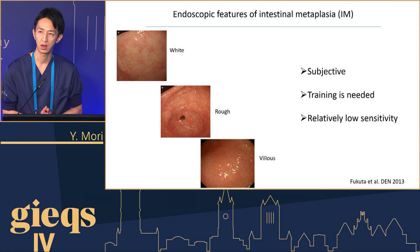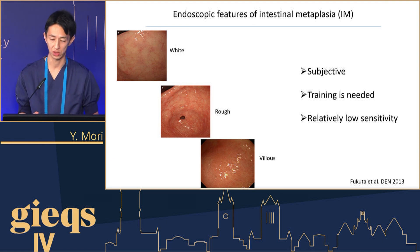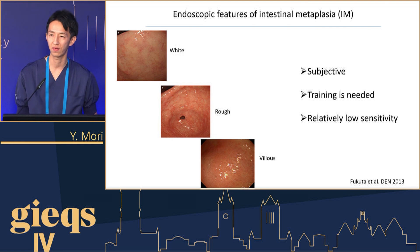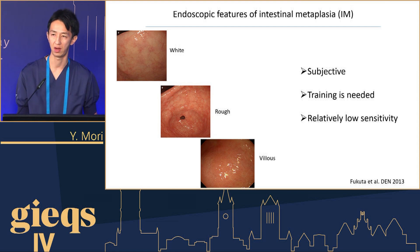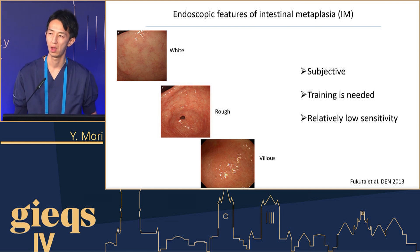Let's start with the endoscopic diagnosis of intestinal metaplasia under white light endoscopy. As you can see here, there are some characteristics such as a whitish appearance, rough surface structure, or a villous component on the surface of the mucosa. But right now, I would say it is very difficult to identify this kind of structure in an accurate way under white light endoscopy because it's very subjective and the change is quite tiny. Intensive training is required to get familiar with this kind of appearance. Honestly speaking, the sensitivity for intestinal metaplasia is not optimal with white light endoscopy observation.